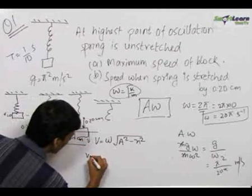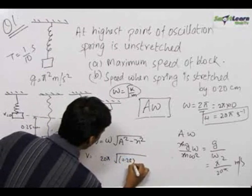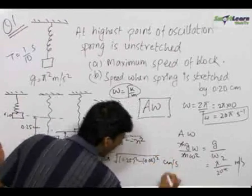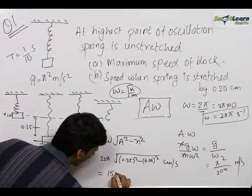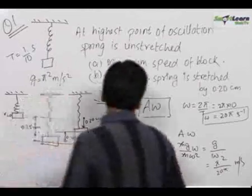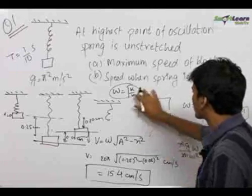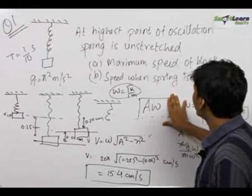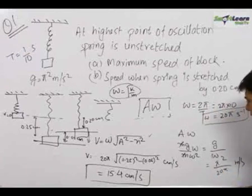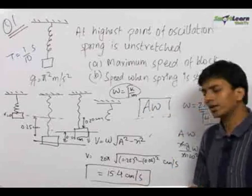Feeding in the values: v equals omega times root of A squared minus x squared, that is 20π times root of (0.25)² minus (0.05)² centimeters per second. The final answer comes out to be 15.4 centimeters per second. So by applying v equals omega root of A² minus x² and omega equals root of k by m, we found maximum speed as π/20 meters per second and speed at 0.20 cm stretch as 15.4 centimeters per second.